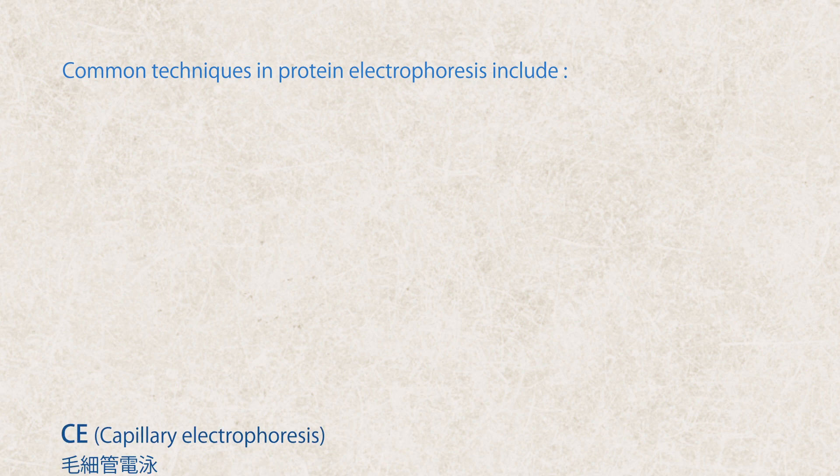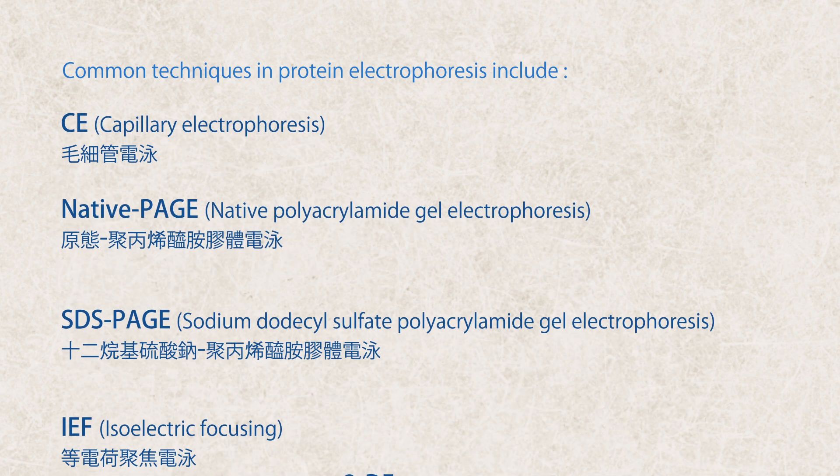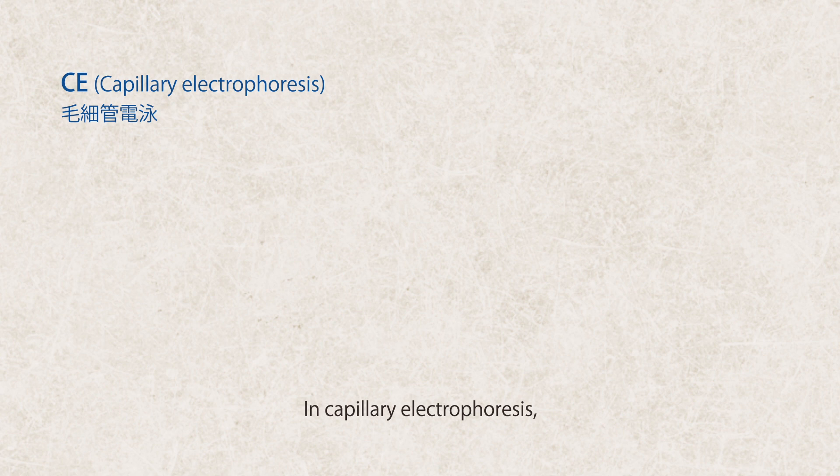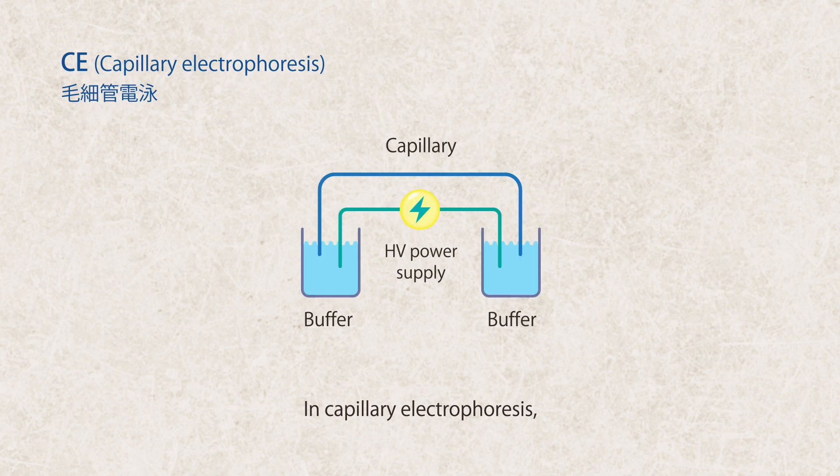Common techniques in protein electrophoresis include capillary electrophoresis CE, native polyacrylamide gel electrophoresis native PAGE, sodium dodecyl sulfate polyacrylamide gel electrophoresis SDS-PAGE, isoelectric focusing IEF, and two-dimensional gel electrophoresis 2DE.